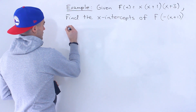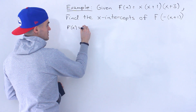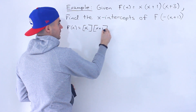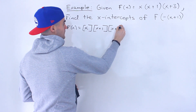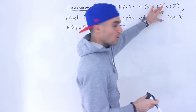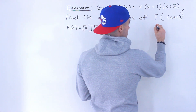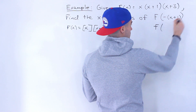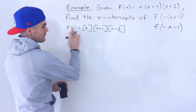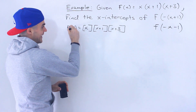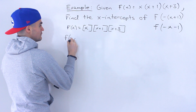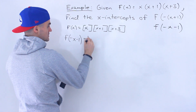First I'm going to rewrite the function over here. So we have f of x equals x — and I'm going to put these factors in square brackets — so x times x plus 1 times x plus 3. For f of negative bracket x plus 1, we have to plug in this whole expression for these x values. I'm going to simplify this by distributing that negative inside the bracket, giving us f of negative x minus 1, and then plug that expression in for all the x values.